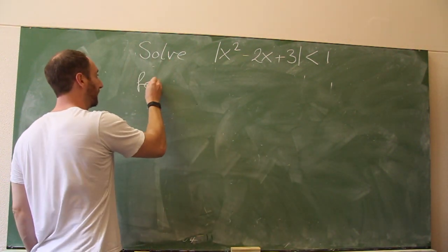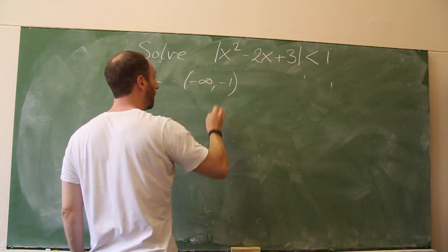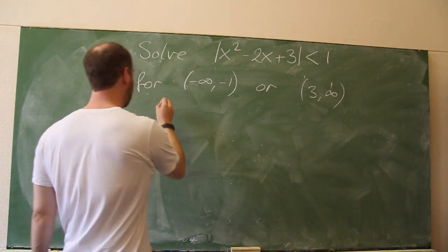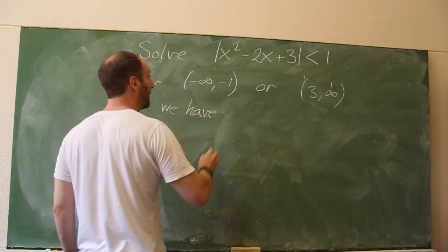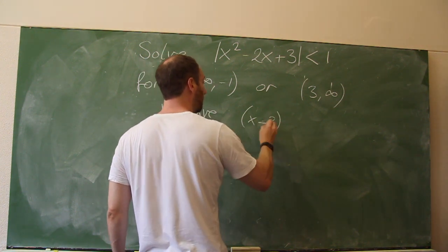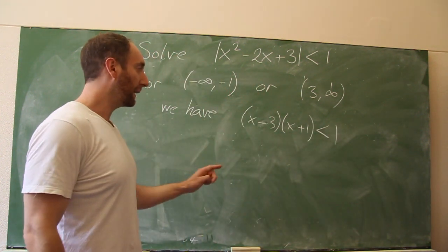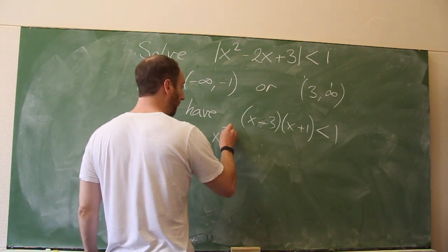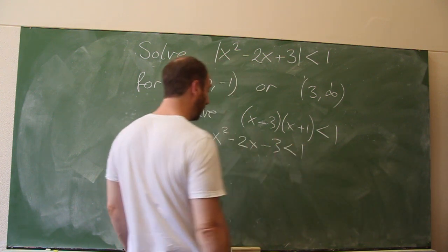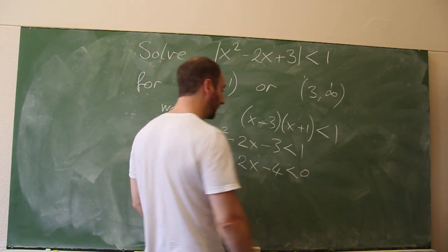For the regions (−∞, −1) or (3, ∞), we have the inequality (x − 3)(x + 1) < 1. Let's expand this out. We get x² − 2x − 3 < 1, or x² − 2x − 4 < 0.